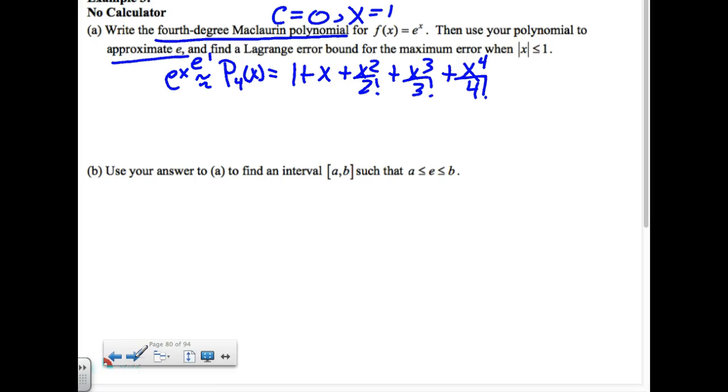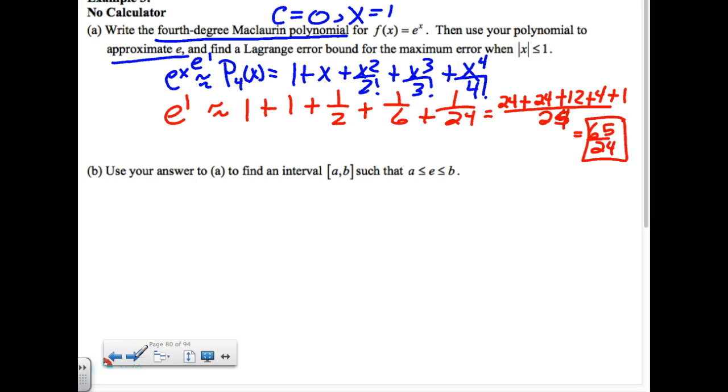And you should have this one memorized. Do you have the e memorized? One plus x plus x squared over two factorial plus x cubed over three factorial plus x to the fourth over four factorial. And I don't put dot dot dot, because this is my polynomial I'm going to use to approximate e. I'm going to approximate e to the first using this polynomial. So the next thing I go do is I go get e to the first. It's going to be approximately one plus one plus one half plus one sixth plus one twenty fourth.